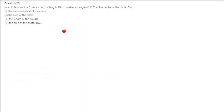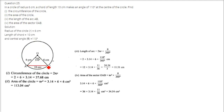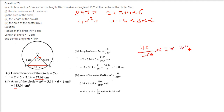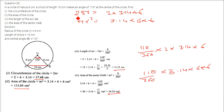In a circle of radius 6 cm, a chord of 10 cm makes an angle of 110 degrees at the center. Find the circumference of the circle, area of the circle, length of the arc, and area of the sector. Circumference is 2 pi r equals 2 into 3.14 into 6, giving 37.68. Area of circle is pi r squared, 3.14 into 36, giving 113.04 cm square. Arc length is 110 by 360 into 2 pi into 6, giving 11.51. Area of sector is 110 by 360 into 3.14 into 36, giving 34.54 cm square.